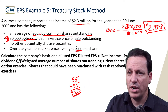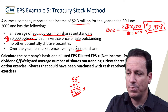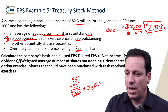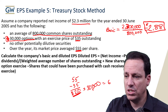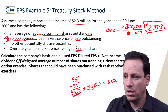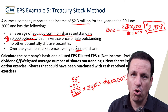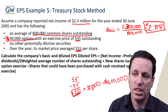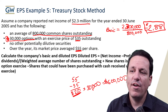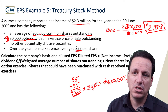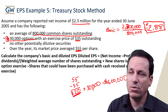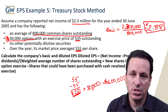We take that $20 and multiply it by the 30,000 options outstanding, and we get $600,000. That's what all of these options are worth. So if everybody executed their option, the company would have to pay out $600,000.